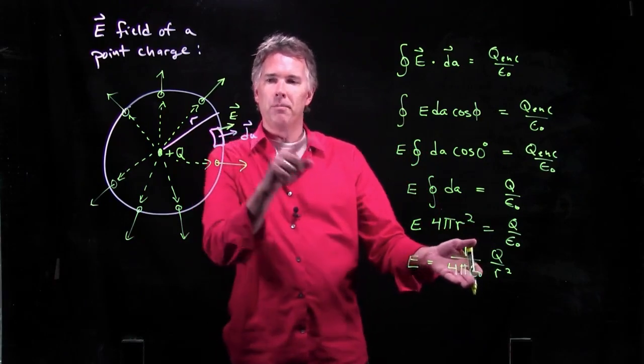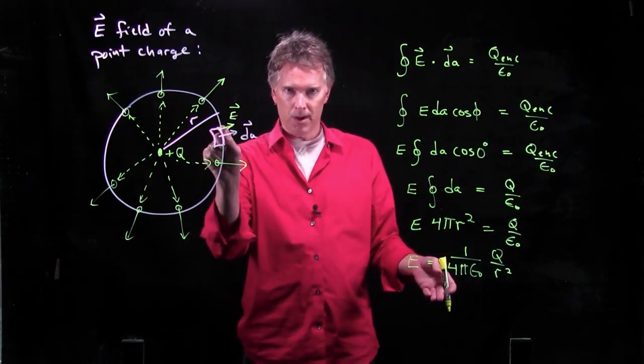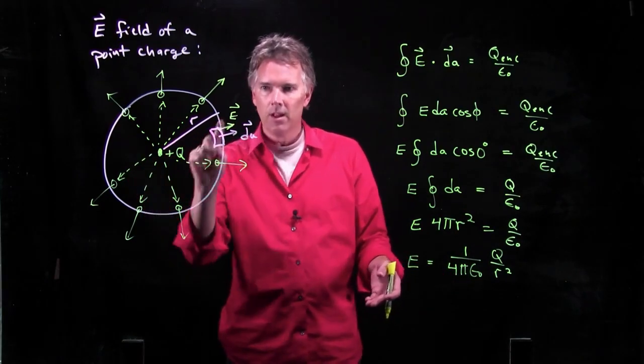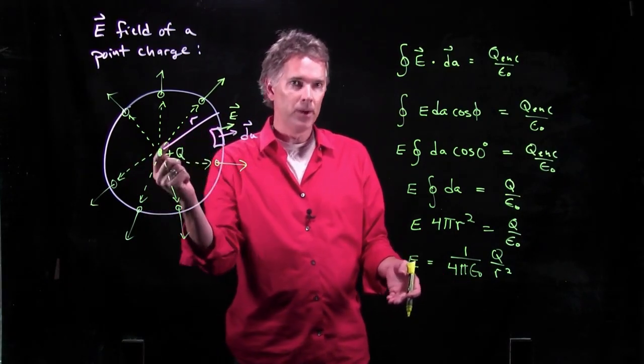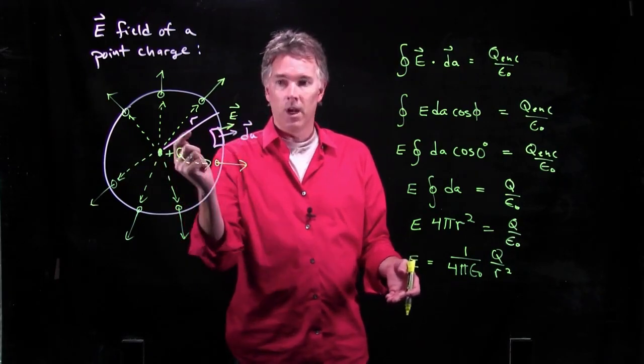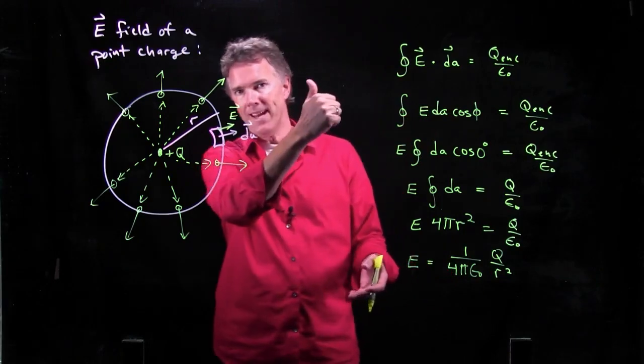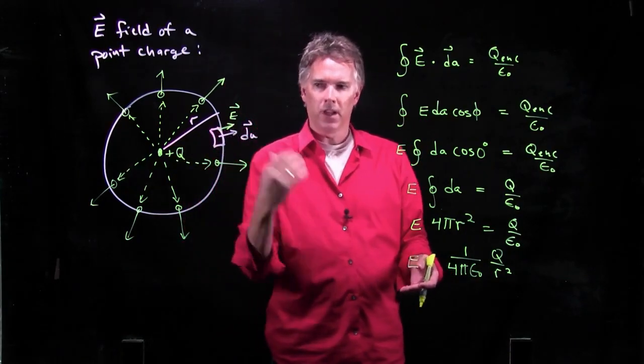The direction comes back from the symmetry in the problem. When we first wrote this down, we said the symmetry of the problem means the electric field has to be pointing radial. It's either radially out if it's a positive charge, it's radially in if it's a negative charge. In this case,